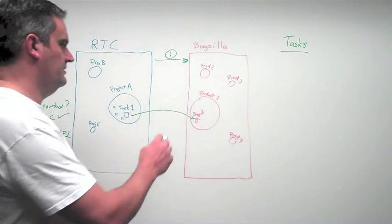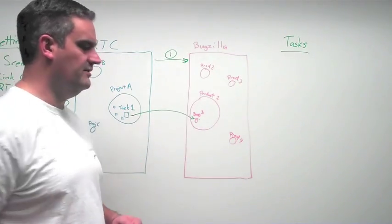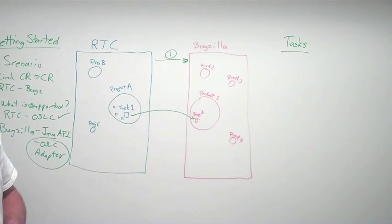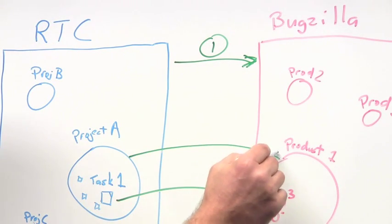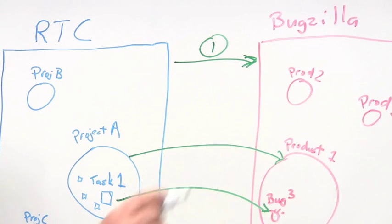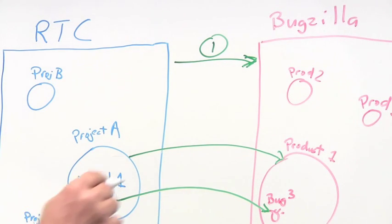What type of container thing do I want to connect to or associate with within the Bugzilla context? For this scenario, we'll say, Bugzilla has a grouping of products among different ways it can do things. We'll say we want to connect project A to product one. That'll be the second step.